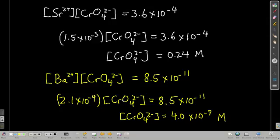So let's see, how much do we have to add? Well, the KSP for strontium chromate is 3.6 times 10 to the minus 4, and it's just equal to the concentration of strontium times the concentration of chromate. In our solution, the concentration of strontium is 1.5 times 10 to the minus 3. If we plug that into our KSP, solve for the concentration of chromate, we get 0.24 molar. What that means is that until the concentration of chromate in that solution is greater than 0.24 moles per liter, no strontium chromate will precipitate out.